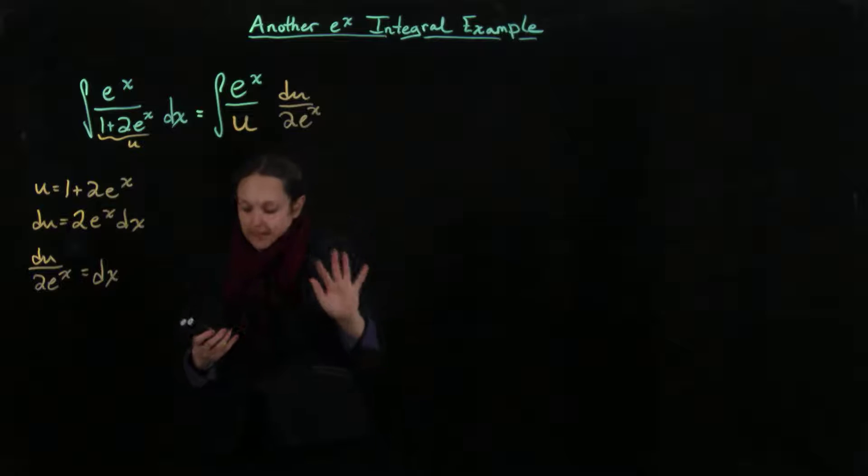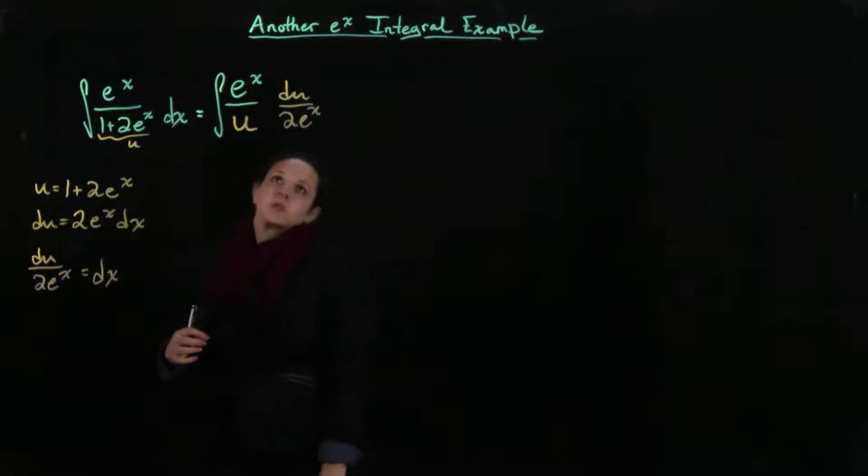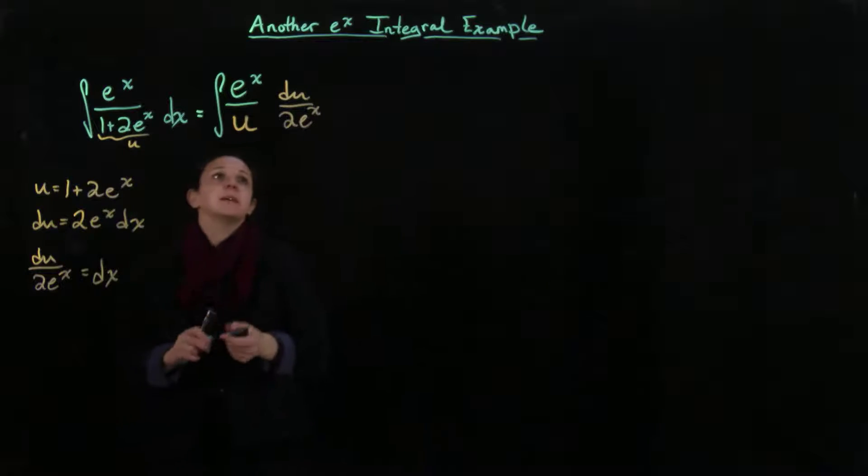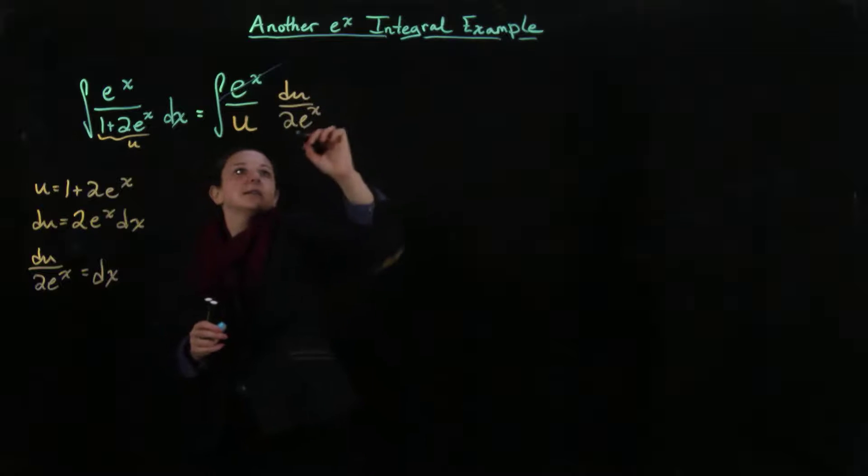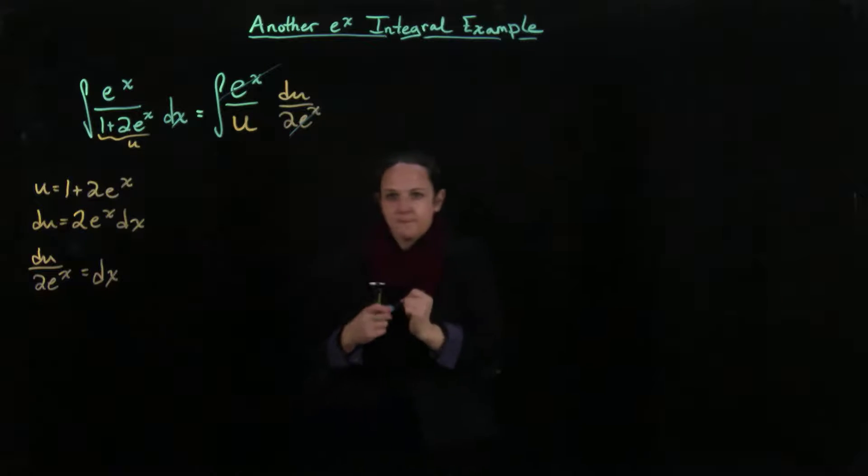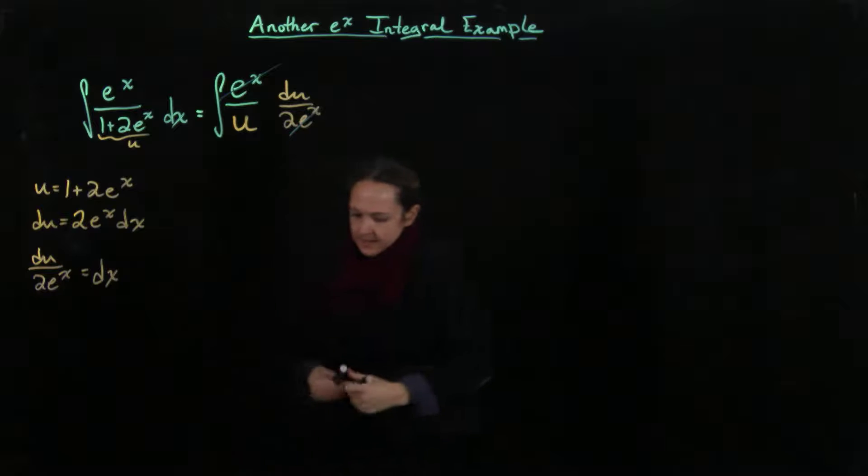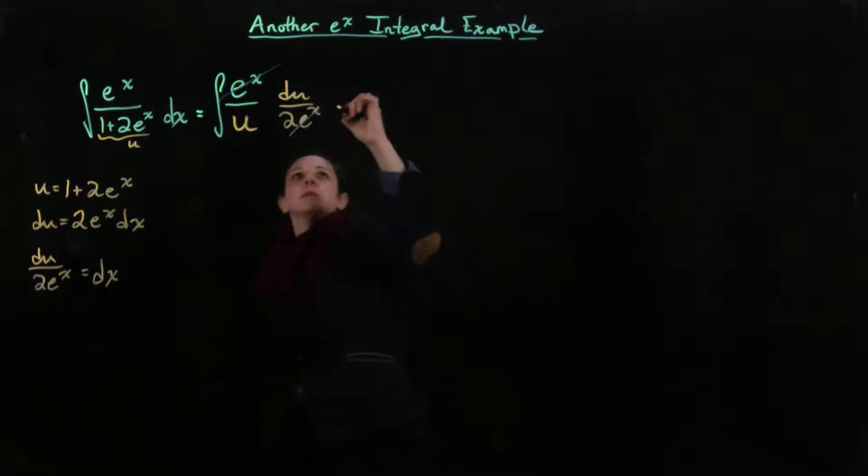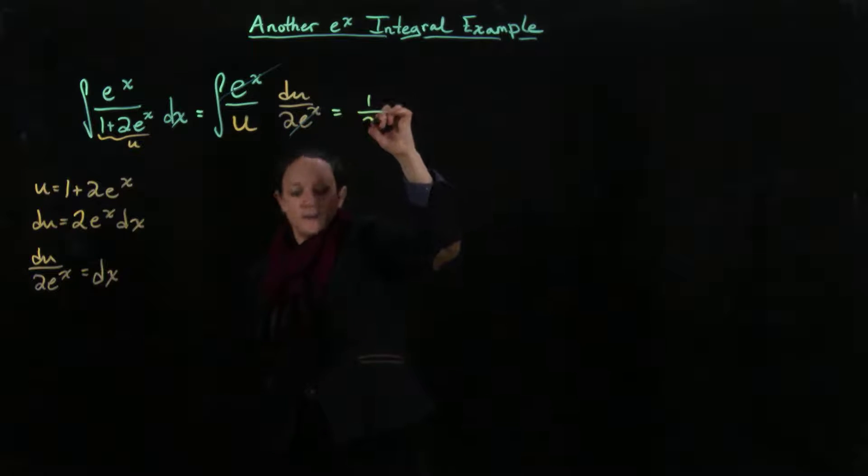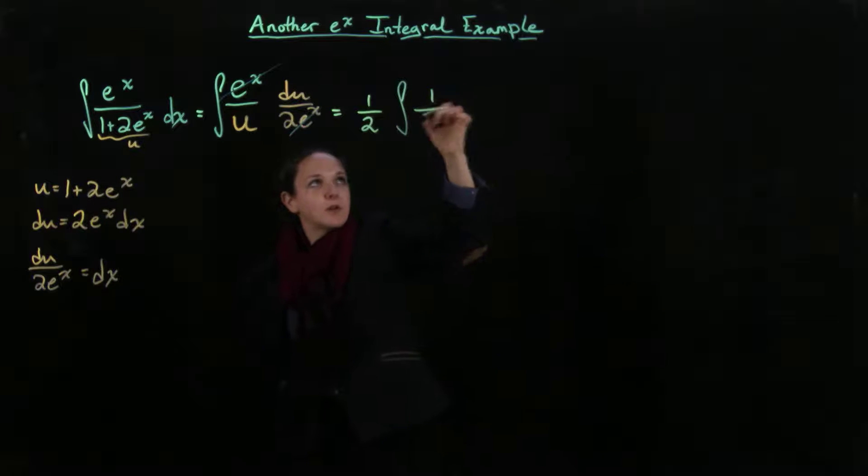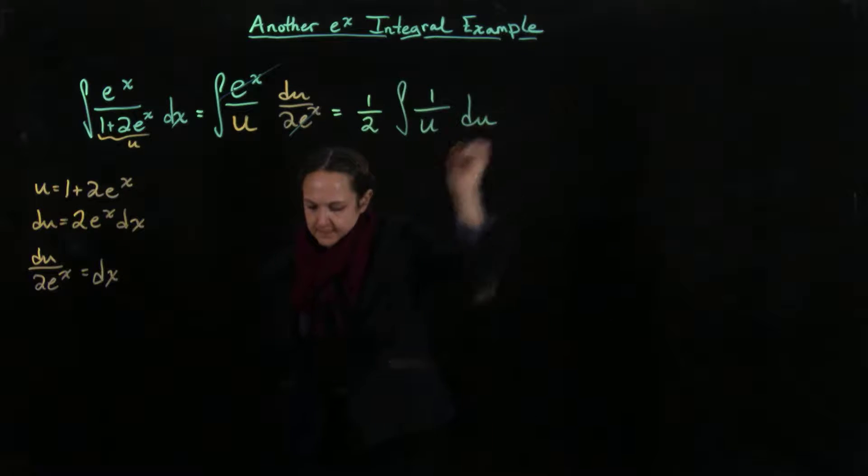And then, so it looks like not quite everything's in terms of u yet, but we're okay because this e to the x and this e to the x are going to cancel. And I'm going to be able to get out 1 half times the integral of 1 over u du.